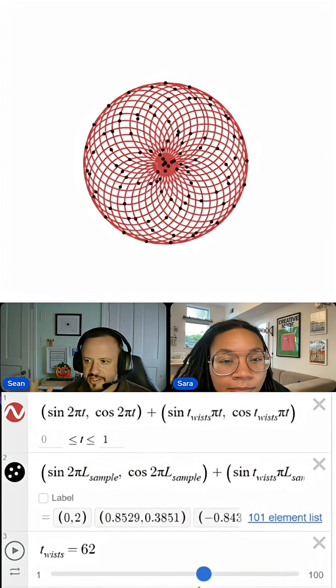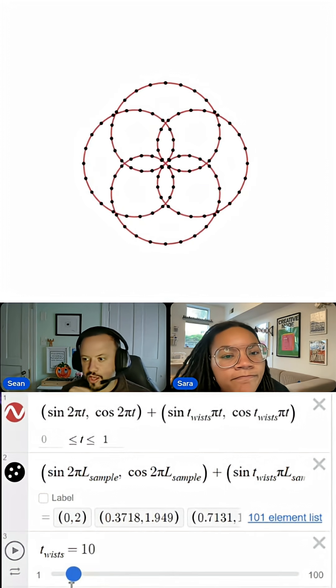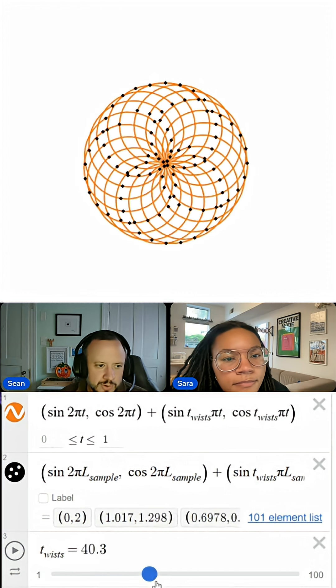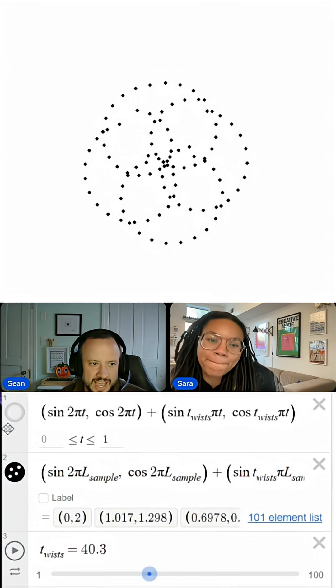If we didn't have a lot of twists, we would see exactly what we'd expect, which is just kind of like points along the curve. But as we add more twists in, what happens is we don't have enough points to hit everything and we get sort of a pattern.